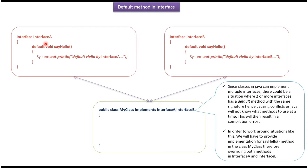Here you can see interface A — it has a default method say hello. Here you can see interface B — it also has a default method say hello. So both interface A and interface B have the say hello method which is default. Here you can see my class which implements interface A and interface B. This will give a compile time problem, because my class does not know whether to use the say hello method of interface A or the say hello method of interface B.